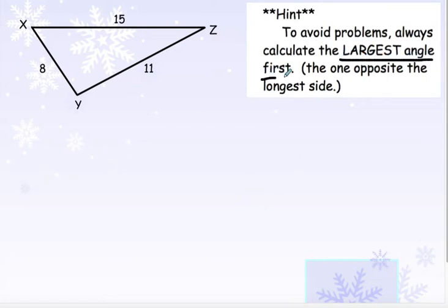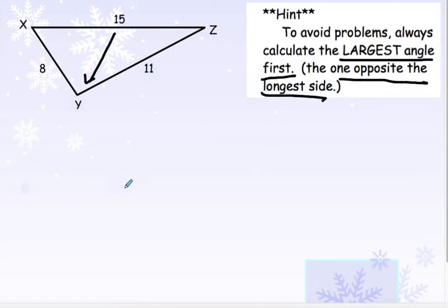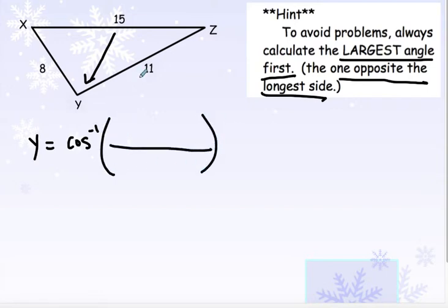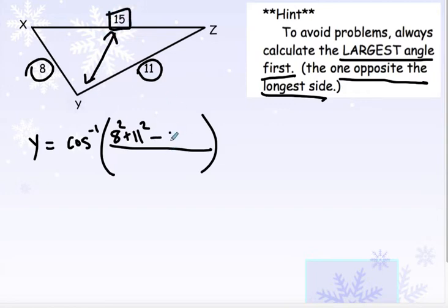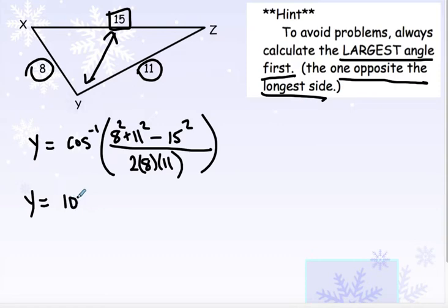Always find the largest angle first — this is tied to the ambiguous case and we want to avoid that. The largest angle will be across from the largest side. The largest side here is 15, so Y is going to be the largest angle. To find Y, I do the inverse cosine: on the top, take the two sides surrounding my angle, square them and add them up, minus the side across from my angle squared, divided by two times the two sides surrounding my angle. You should get 103.14 degrees — that's our largest angle.